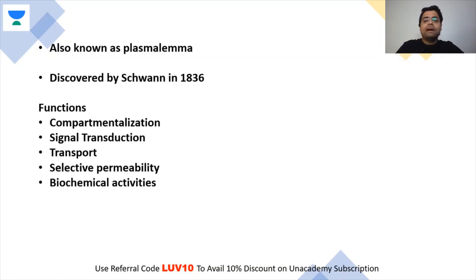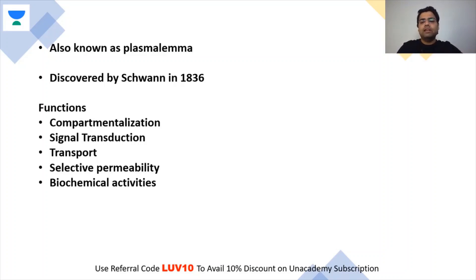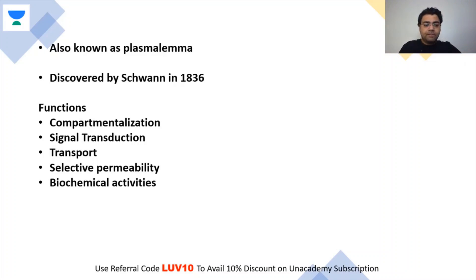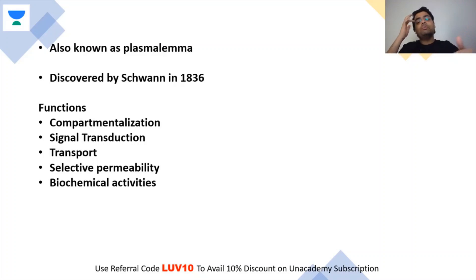Now let's talk about the functions of the plasma membrane. Plasma membrane has a very typical structure. If you think that the plasma membrane creates a boundary, then its work relates to compartmentalization. When it comes to organelles, they have a membrane — this is the endomembrane system.